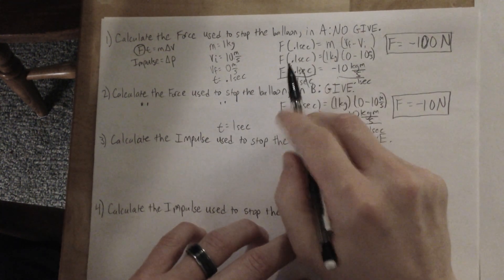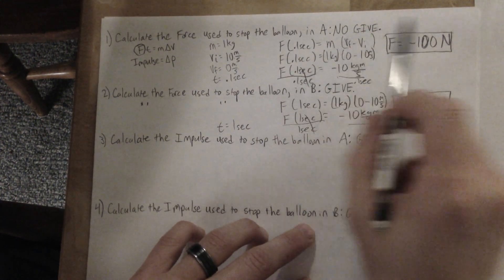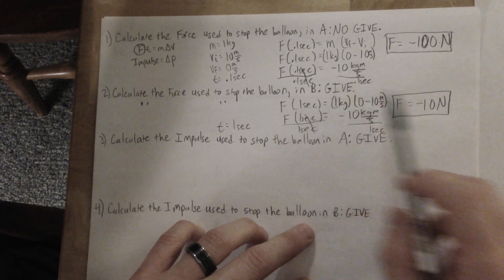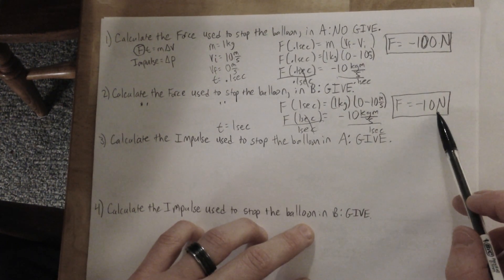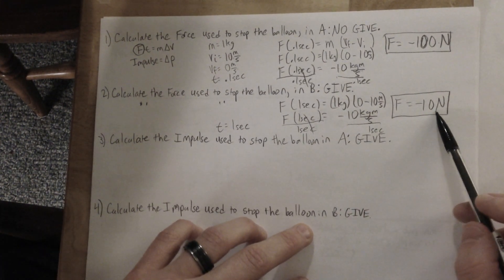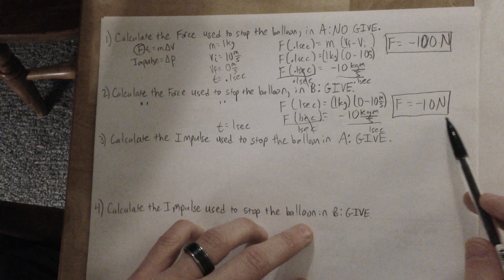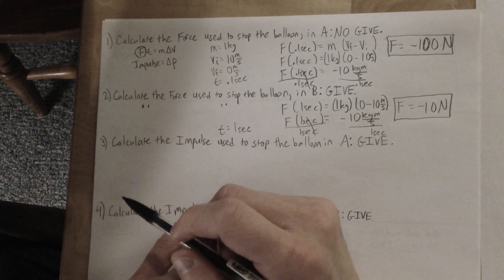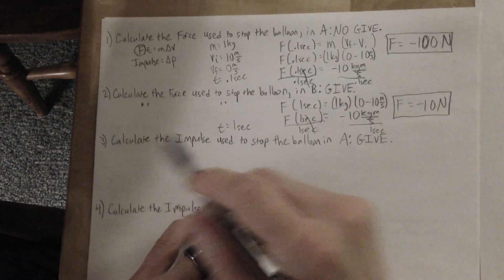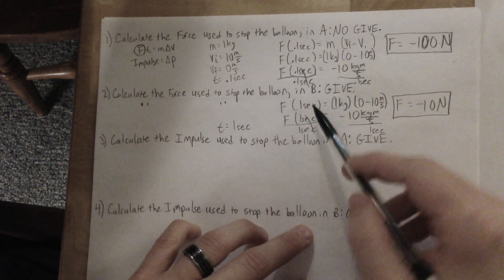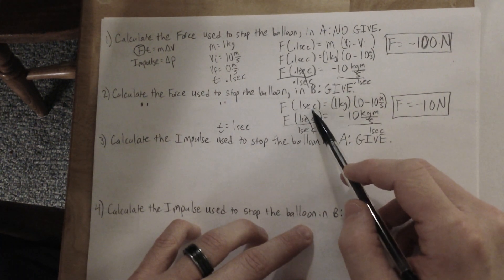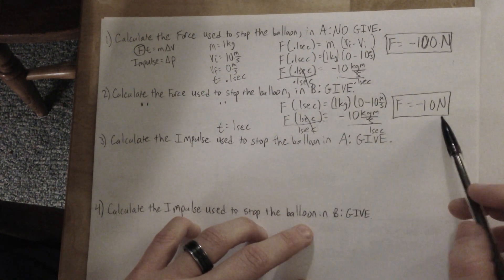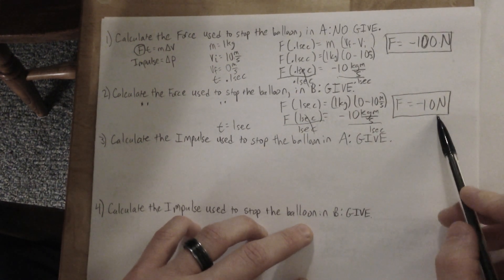When there was no give, the force was 100 newtons. When there was a give, it was 10 newtons — ten times less force. Ten times more contact time gave us ten times smaller force.